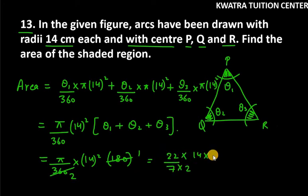Now cancel 7 with 14, this is 2, 2 will cancel, and you are left with 22 into 14. So the final answer is 308 centimeter square. This is the answer for the shaded region.